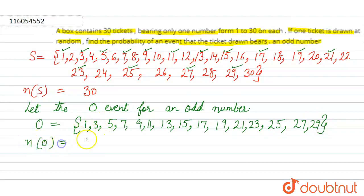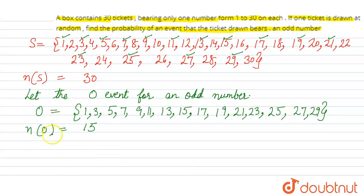These are our odd numbers. The number of event points n(O) is 15. So now we can find the probability. Probability for the event O is equal to n(O) upon n(S), that is equal to 15 upon 30, which equals 1 by 2. So the probability for an odd number is 1 by 2. This is what we needed to find. I hope you understand this question. Thank you.